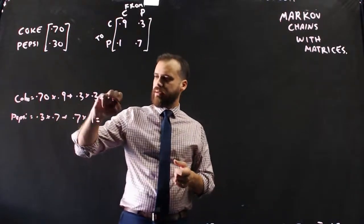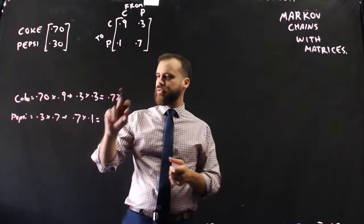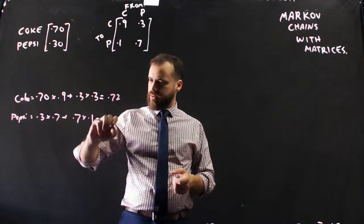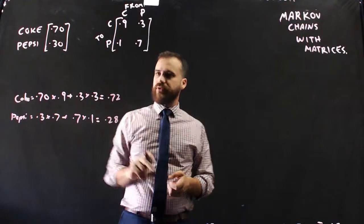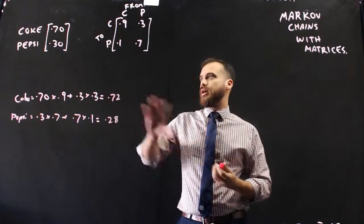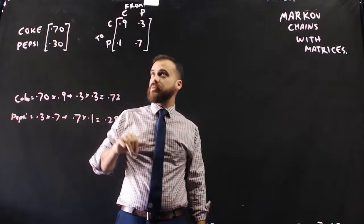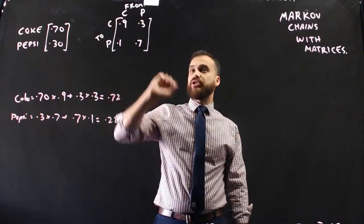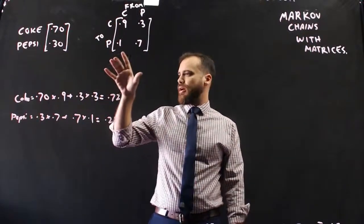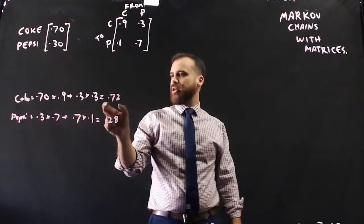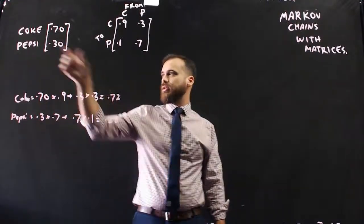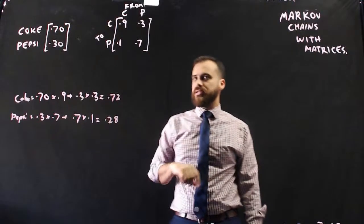If I look at that, it's going to be 0.72 for Coke and 0.28 for Pepsi. So you can see that under these conditions, with a starting point of 70% Coke, 30% Pepsi, and this change or transition matrix, we're going to end up with slightly more Coke drinkers at the end of the month and slightly less Pepsi drinkers at the end of the month.